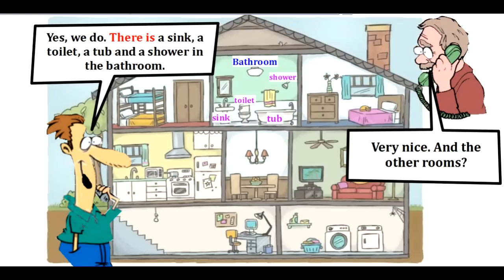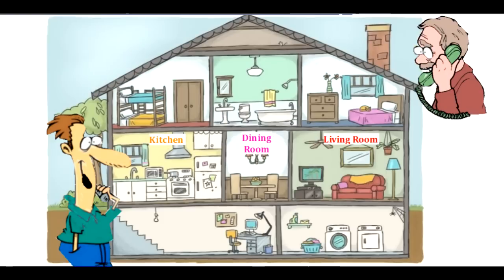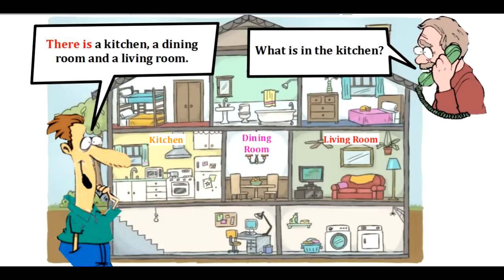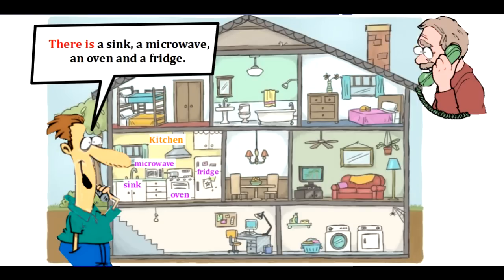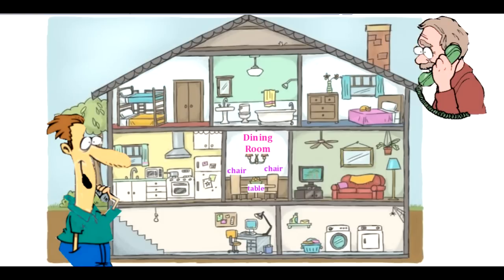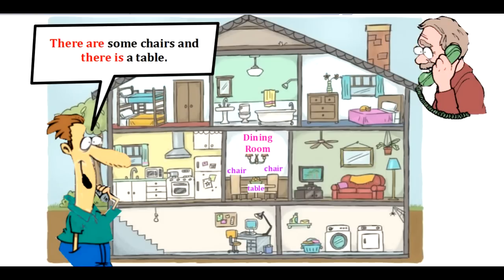Very nice. There is a kitchen, a dining room, and a living room. What is in the kitchen? There is a sink, a microwave, an oven, and a fridge. And what about the dining room? There are some chairs and there is a table.